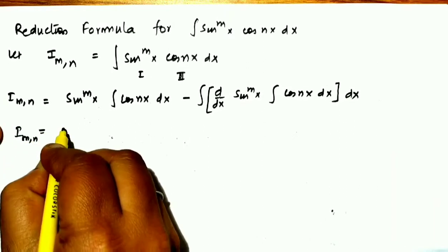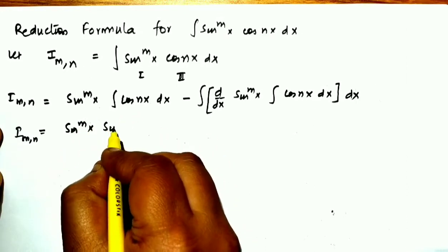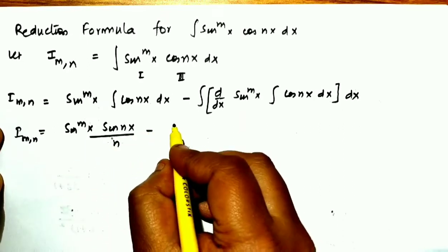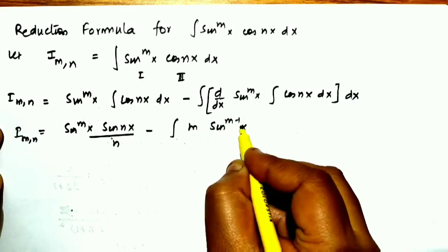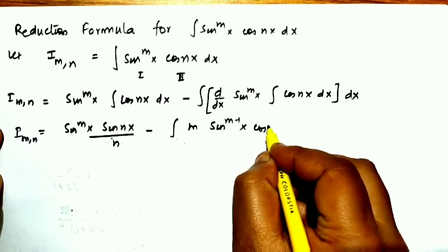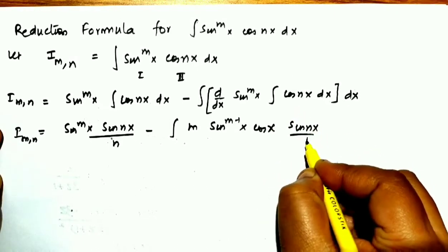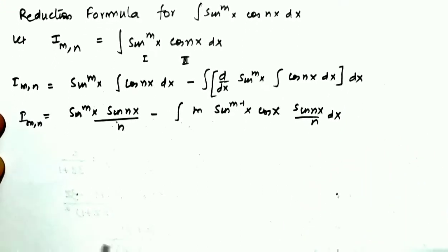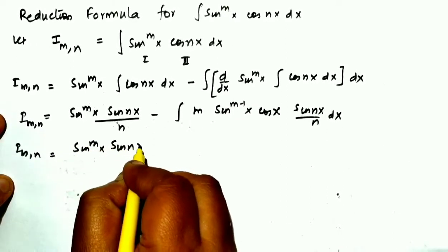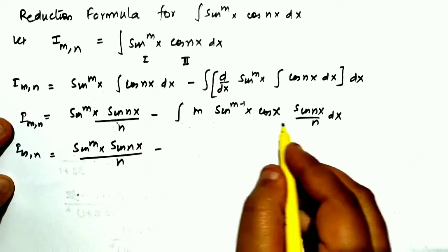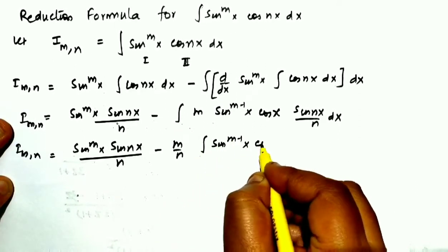Applying integration by parts: the integral of sin^m(x)·cos(nx) gives us sin^m(x)·sin(nx)/n, minus the integral of the differentiation of sin^m(x) multiplied by sin(nx)/n dx. So I(m,n) equals sin^m(x)·sin(nx)/n, minus m/n times the integral of sin^(m-1)(x)·cos(x)·sin(nx) dx.